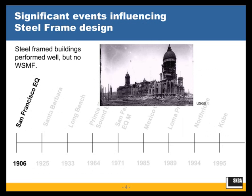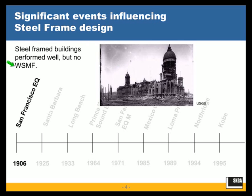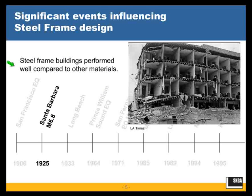Looking at the significant earthquakes: in 1906, the Richter scale hadn't been established yet, but they estimated the magnitude of the San Francisco earthquake was about 7.7 to 7.9. It caused a great amount of damage, mainly after the fact, with the widespread fire. There were some steel buildings at the time, but they were riveted frames — the welded steel moment frame hadn't come into the picture yet and wouldn't for several decades later.